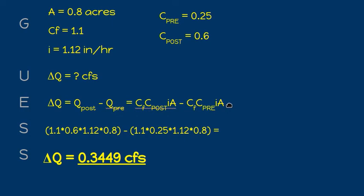When we plug all this into our calculator we're going to take Cf times C2 times i times A minus Cf times C1, the coefficient of runoff before we improved the site, times i times A, and we will get a change in the runoff rate of 0.3449 cubic feet per second.